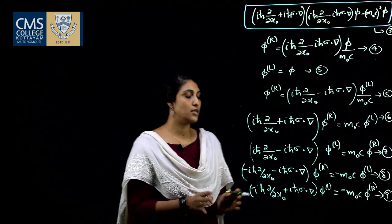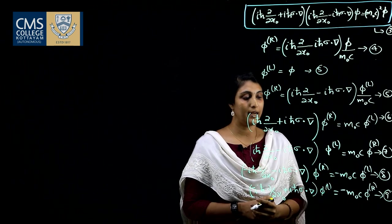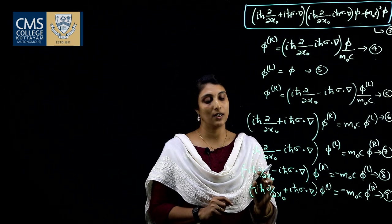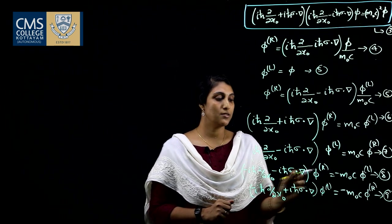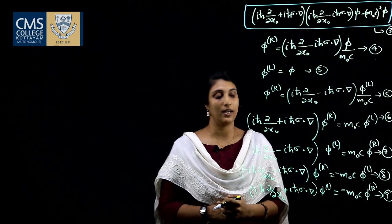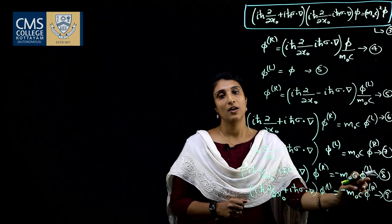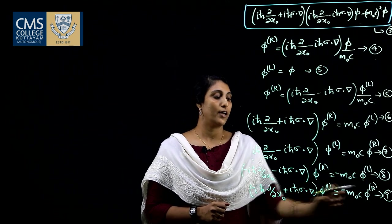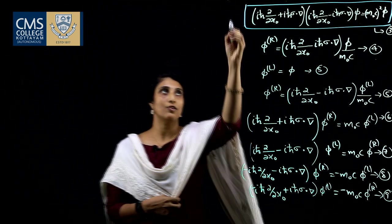These two equations, 8 and 9, are first-order equations in ∂/∂t as well as ∇. These two equations couple φᴿ and φᴸ — the left-hand side involves φᴿ and the right-hand side involves φᴸ. Now we have to simplify these equations.